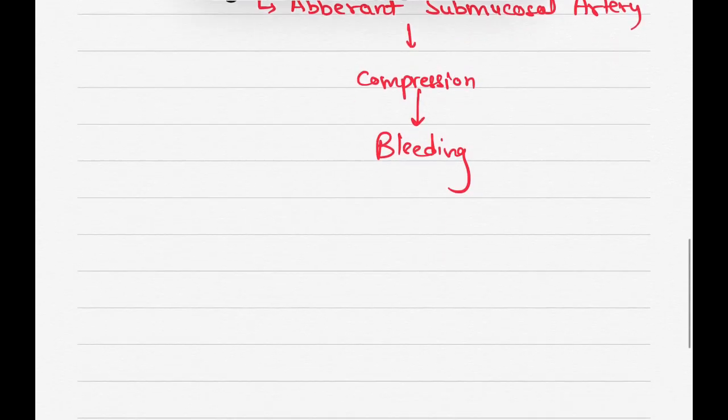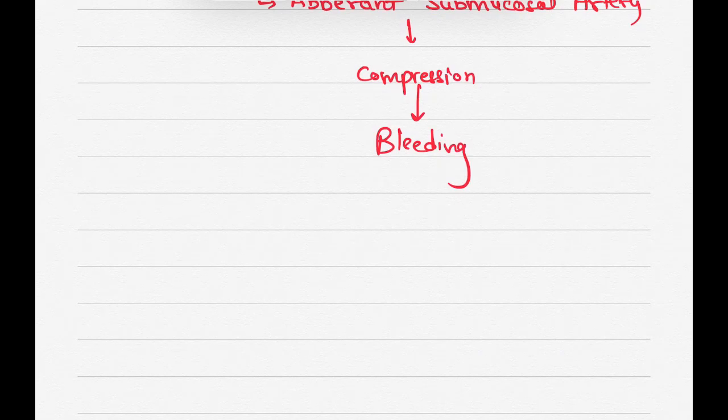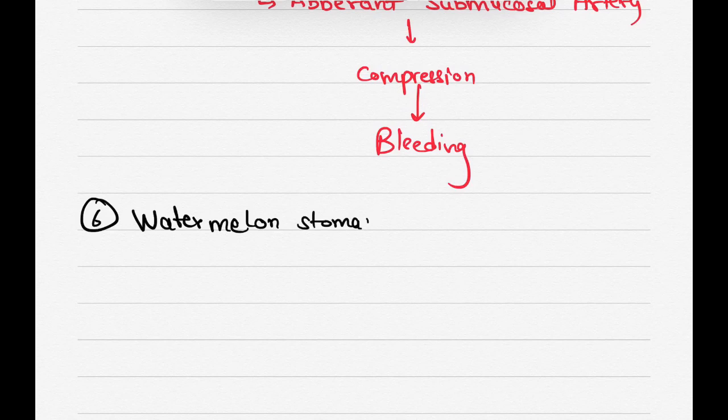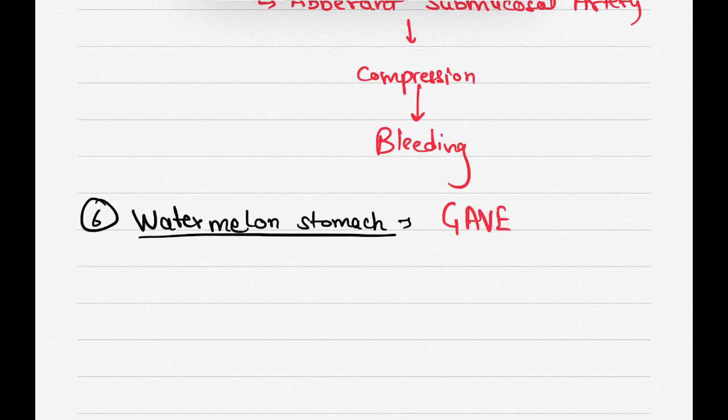Now coming to another cause, which is, the sixth cause is watermelon stomach. This is also known as GAVE, gastric antral vascular ectasia. This is the least common cause.